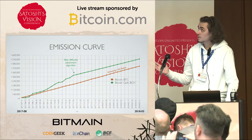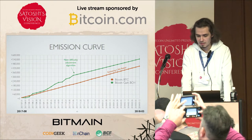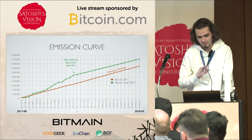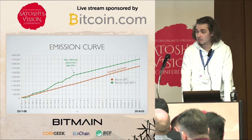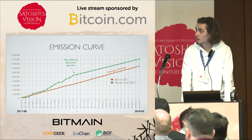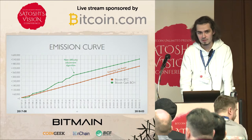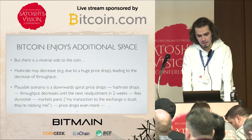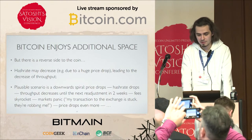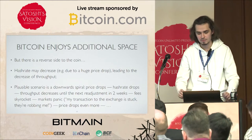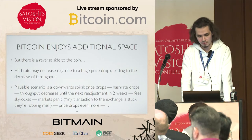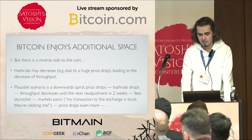Here are the emission curves for the two cryptocurrencies. Once again on the left side the chart for Bitcoin Cash is wobbling, but right now the emission for Bitcoin Cash is lower than for Bitcoin and somewhere in the distant future these two lines will intersect. However, there is a reverse side: hash rate may not only increase but also decrease — for example due to a huge price drop — and that would lead to decreased throughput and a possible downward spiral.